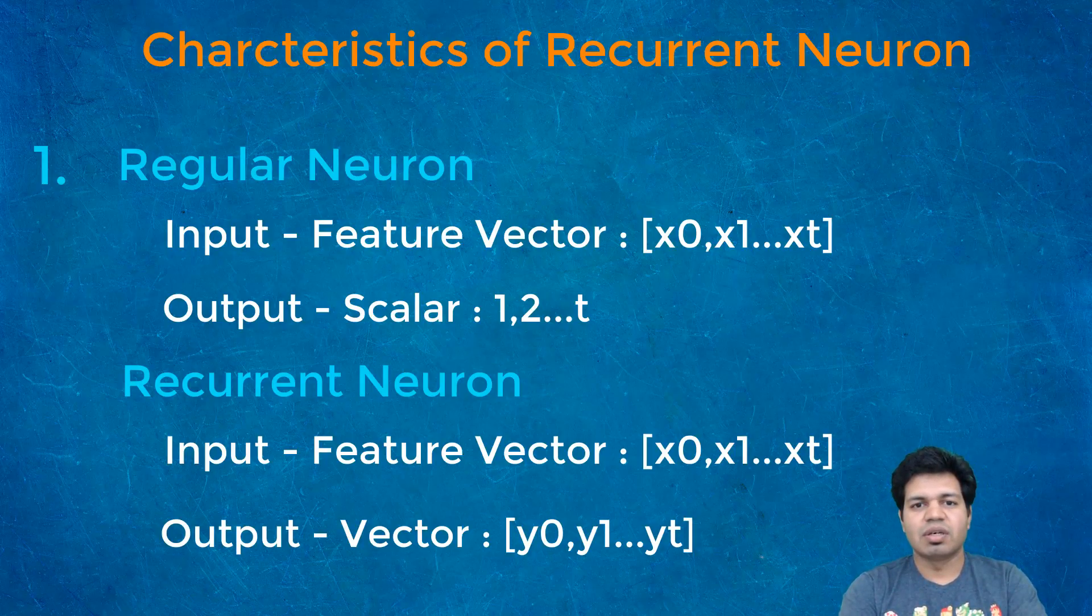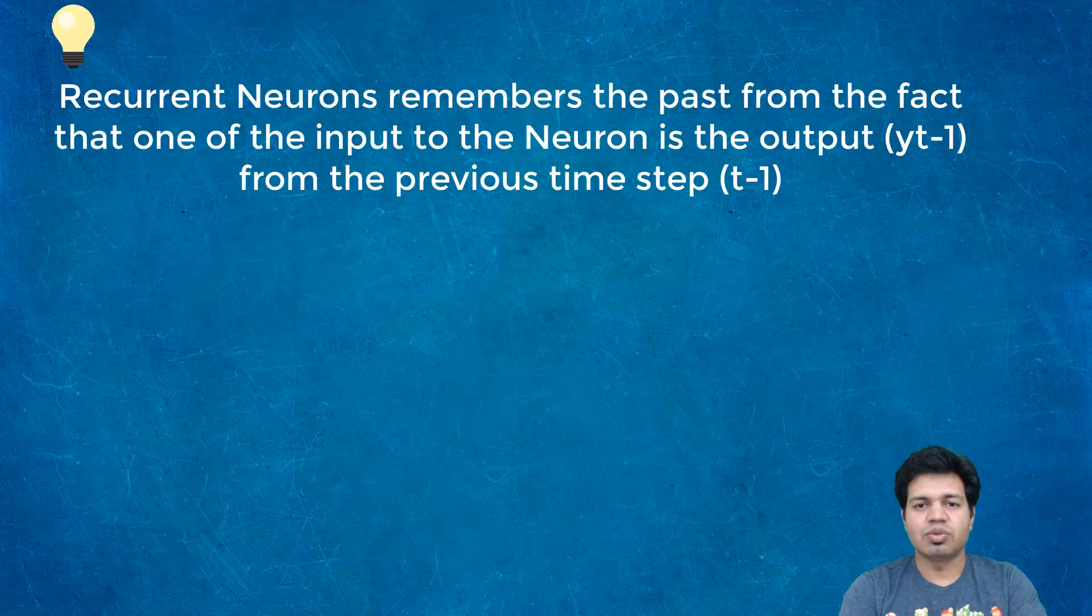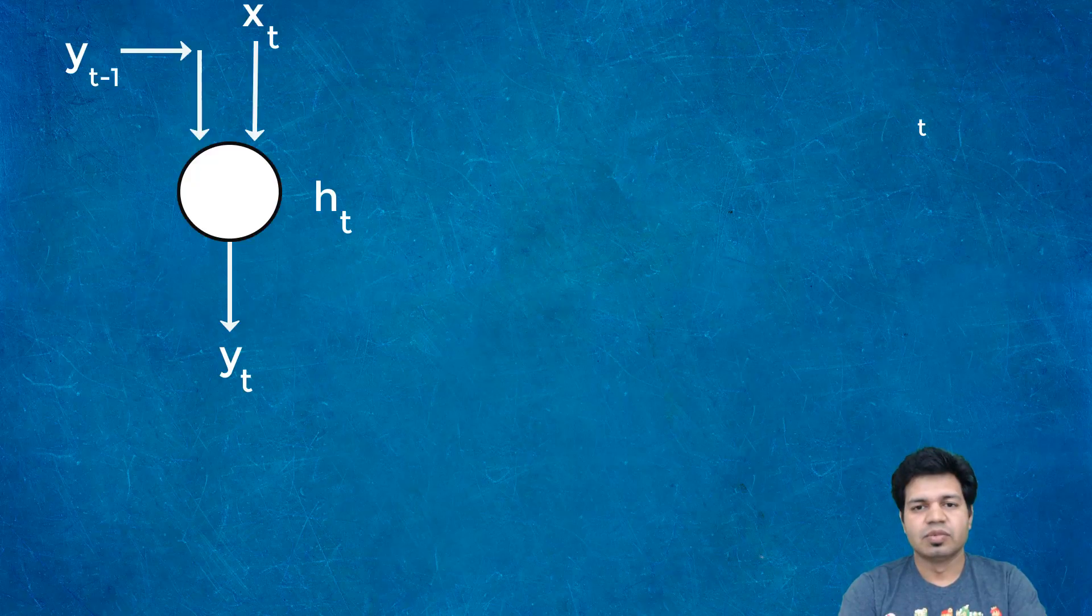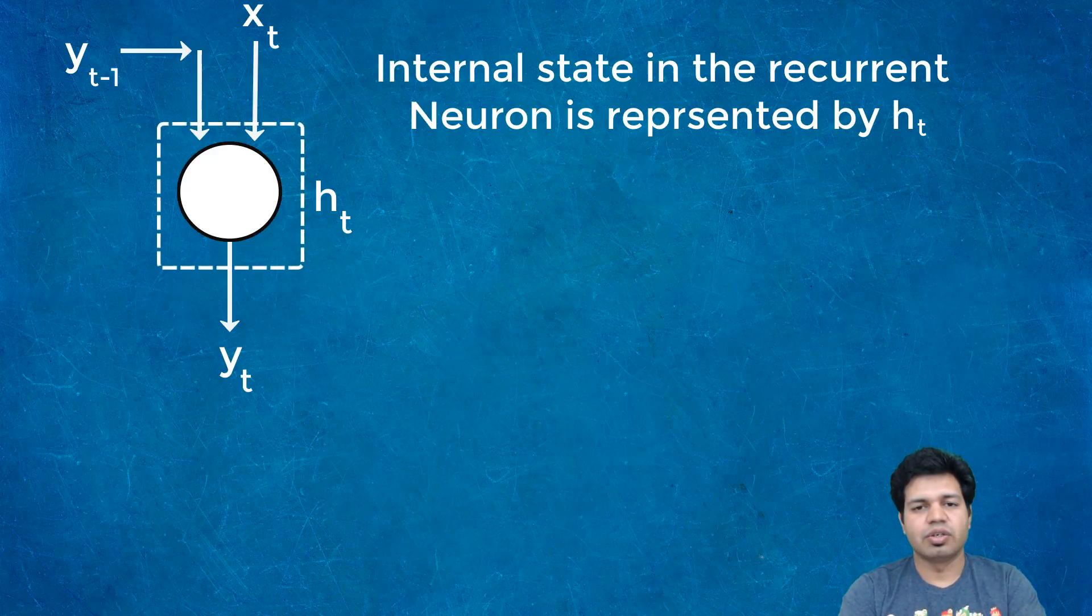Recurrent neurons remember the past as they possess memory. Feeding back the output into the neuron input allows the recurrent neuron to learn from the past. This recurrent neuron can be made more smart by introducing few more concepts which I am going to cover later on. The internal state within the recurrent neuron is represented by HT or H sub T.